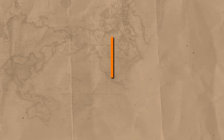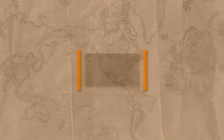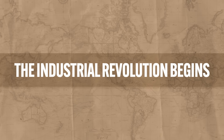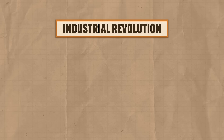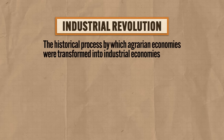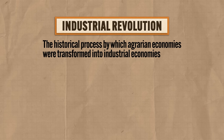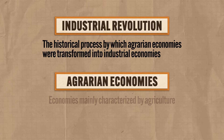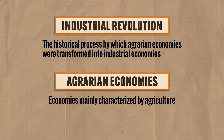If you're ready to get them brain cows milked, let's get to it. Right off the bat, let's define what we're talking about and when. By definition, the Industrial Revolution refers to the historical process by which agrarian economies were transformed into industrial economies. Agrarian economies, in case you forgot, refer to economies mainly characterized by agriculture.